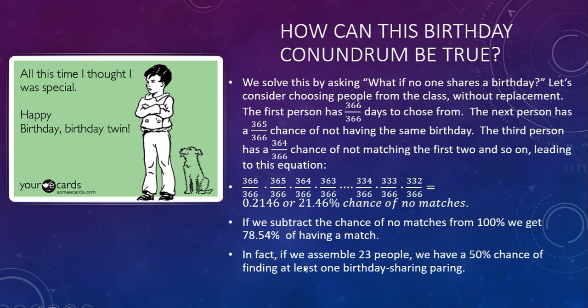In fact, if we could assemble just 23 people, we have about a 50-50 chance of finding at least one birthday-sharing pairing. And if we get 50 people in a room, we're looking at over 97% chance of having a match.